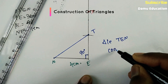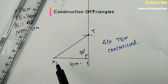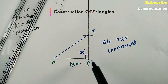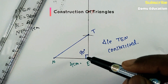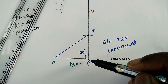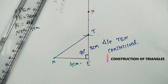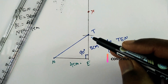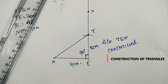The steps of construction are: draw line segment NE with a measurement of 4 centimeters; measure angle 90 degrees and draw a ray along EX; draw an arc with center E and measurement of 3 centimeters; where the arc coincides with ray EX, mark that point as T; and join T and N. Triangle TNE is constructed. Please subscribe if you have not yet subscribed.